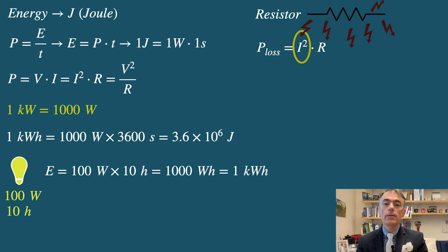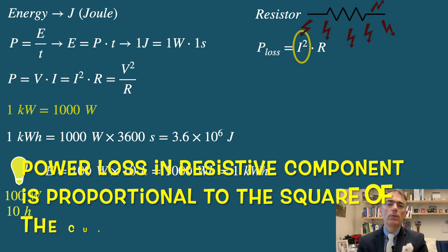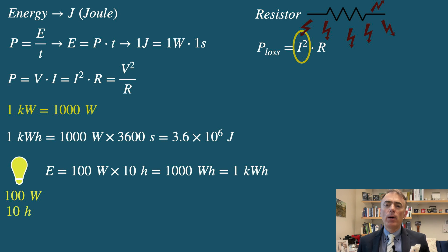How does this impact power losses? The equations P equals I squared R and P equals V squared over R show how voltage and current impact power dissipation. Power loss in resistive components is directly proportional to the square of the current. A higher current leads to significantly higher power loss as heat, which is inefficient and undesirable, especially in power transmission lines.